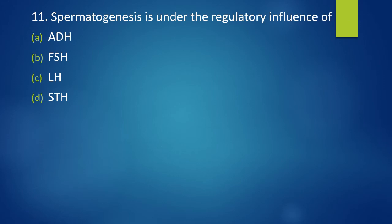Question 11. Spermatogenesis is under the regulatory influence of ADH, FSH, LH or TSH. Spermatogenesis is under the influence of... Correct answer is option B. It is under the influence of FSH.